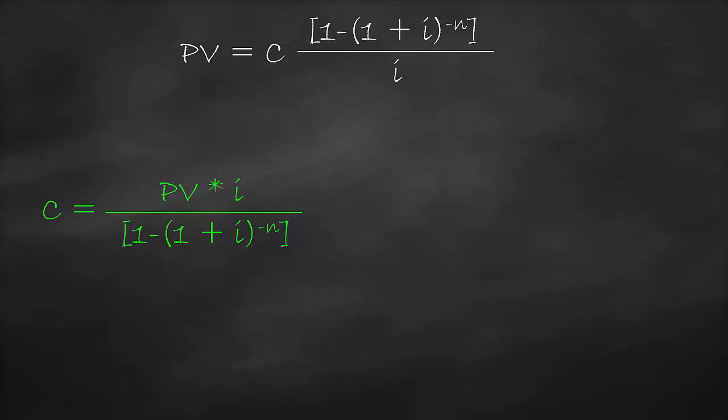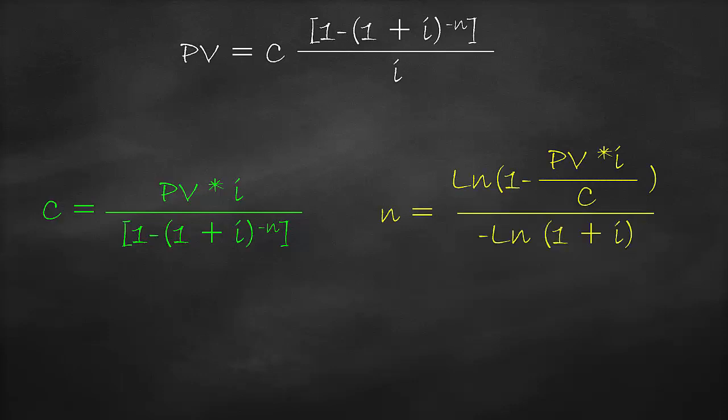Then, let's arrange the present value of the ordinary annuity formula to get the number of periods, N. The number of periods equals: ln of, open bracket, one minus the present value times the interest rate divided by the equivalent cash flow, close bracket, all divided by negative ln of, open bracket, one plus the interest rate, close bracket.